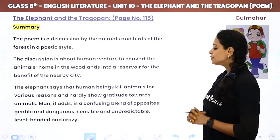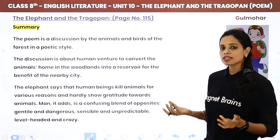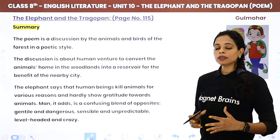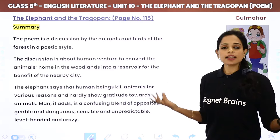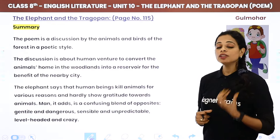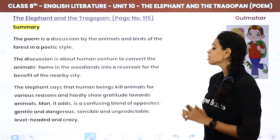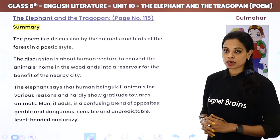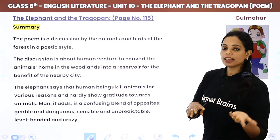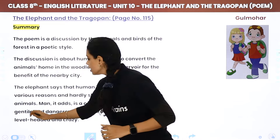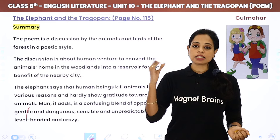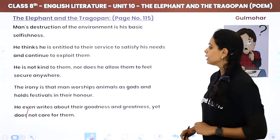The elephant says that human beings kill animals for various reasons and hardly show gratitude towards animals. Man, it adds, is a confusing blend of opposites — sometimes gentle, sometimes dangerous, sensible yet unpredictable, level-headed yet crazy, sane yet mad at the same time. Man is a very confusing creature.